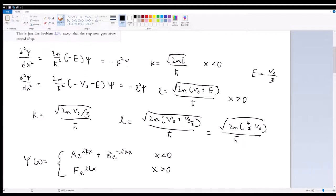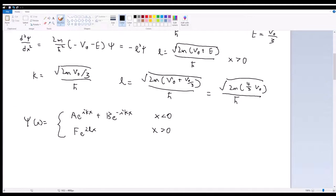So if we want to write this out fully with our boundary conditions and everything, then our boundary conditions are going to be starting with continuity, A plus B equals F for the continuity of the wave function. And then we have the continuity of the derivative, which is going to be ik times A minus B is going to equal iLF.